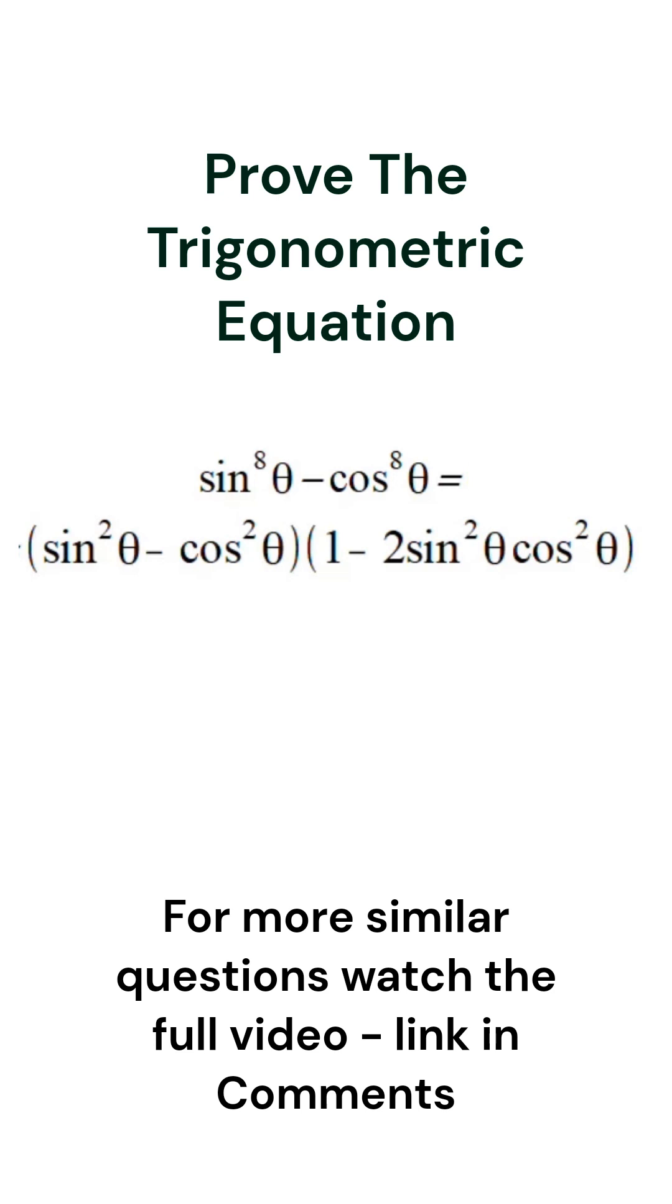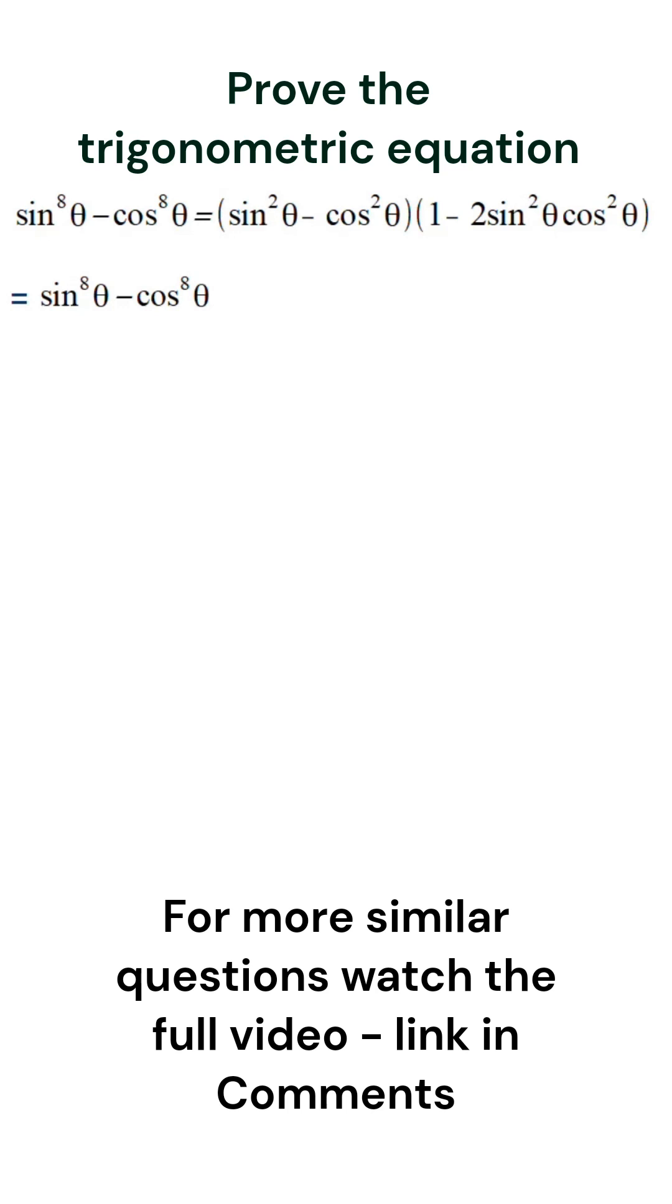On the left hand side we have sin θ and cos θ raised to the power of 8. 8 can be written as 4 squared, so if we apply a² - b² here assuming a equal to sin⁴θ and b equal to cos⁴θ